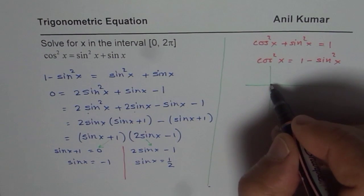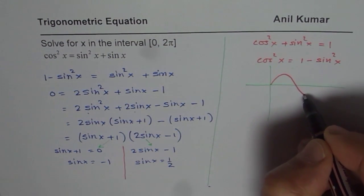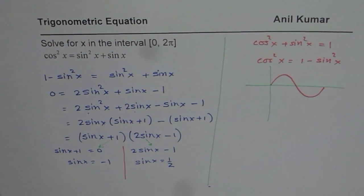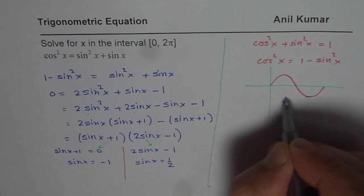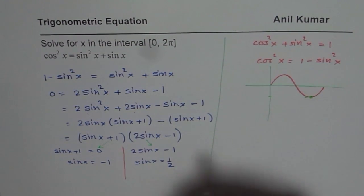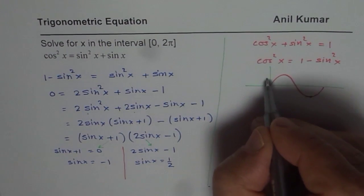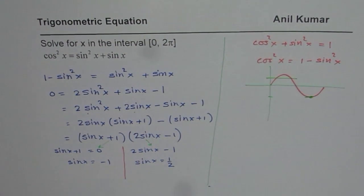So sin graph is basically like this, within 0 to 2π. So we are looking for two kinds of solutions here. One is for sin x is minus 1. So minus 1 is at this point. So that is one point. The other one is at half. So half will be kind of somewhere here. So these are the solutions we are looking for.